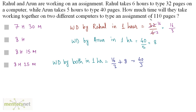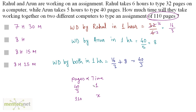How much time will they take when they type 110 pages? We have pages and time. When the time is 1 hour, the pages are 40 by 3. Let the time be x when they type 110 pages. This is directly proportional, so we can equate these ratios: 40 by 3 over 110 equals 1 by x.